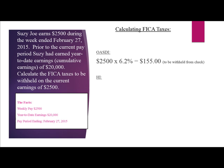The HI taxes are calculated by taking $2,500 times 1.45%, which equals $36.25 to be withheld from the employee paycheck. Total FICA tax to be withheld is $191.25, and the employer will match this.